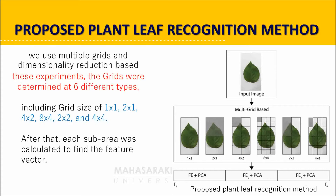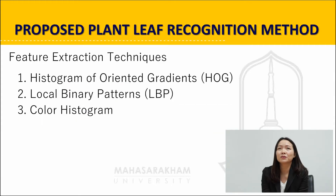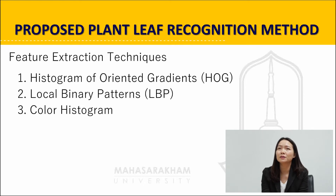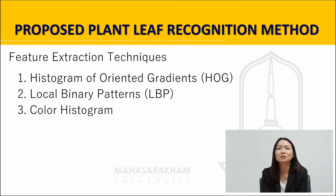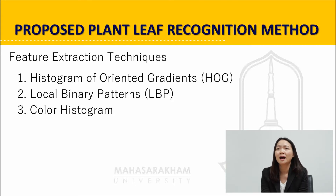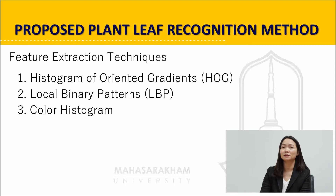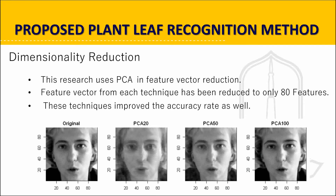Each sub-region was calculated to find the feature vector. Feature extraction technique number one is histogram of oriented gradients — a method that extracts the characteristics of the image by calculating the oriented gradient from the gradient image, finding the gradient in horizontal and vertical directions, which is calculated from pixel intensity. Number two, local binary pattern, is designed for extracting characteristics of pixel points from neighborhood pixels. And color histogram: this research used two types of color models — RGB and HSV.